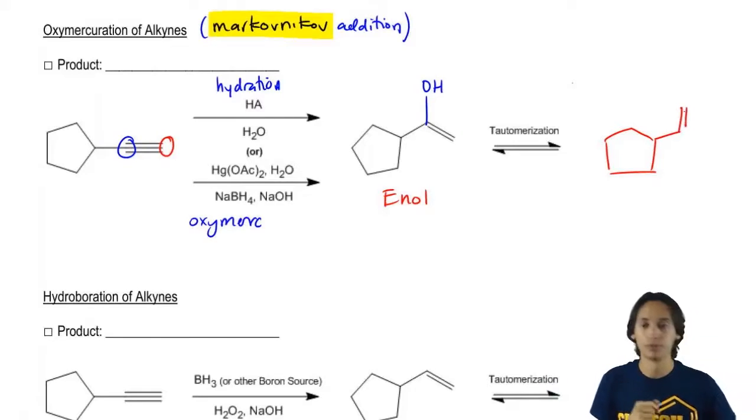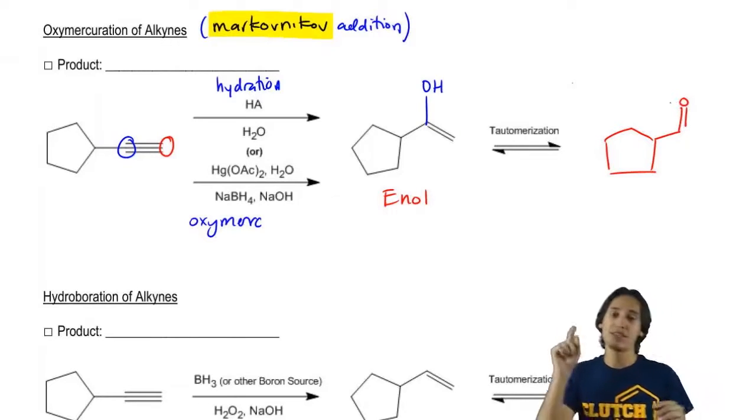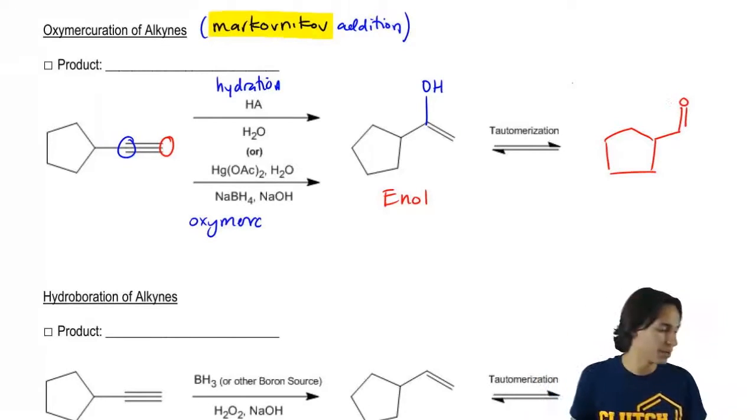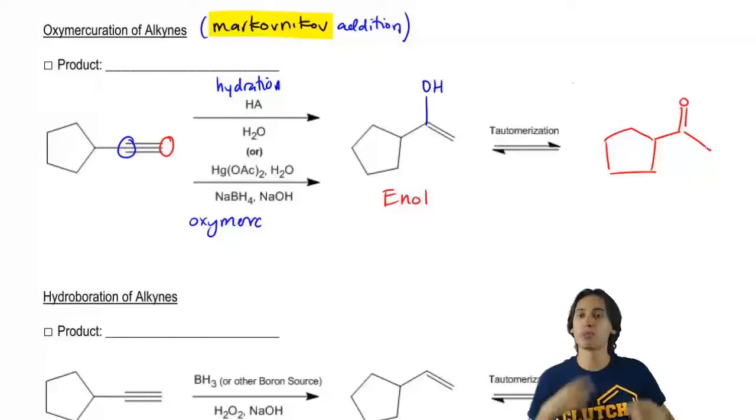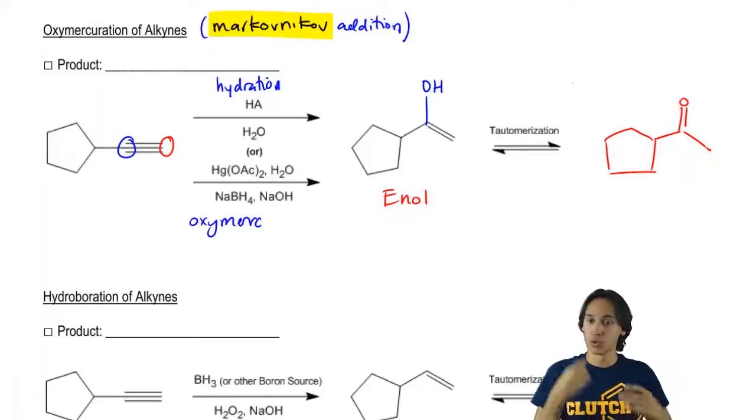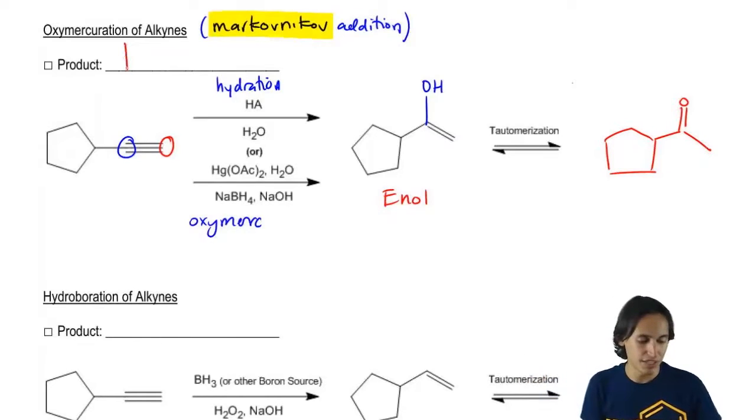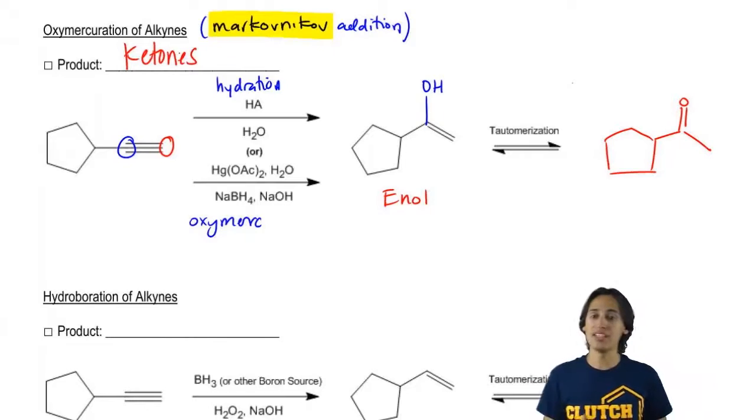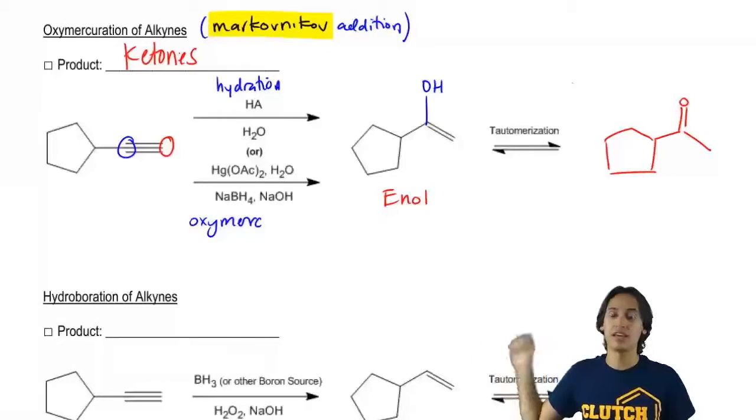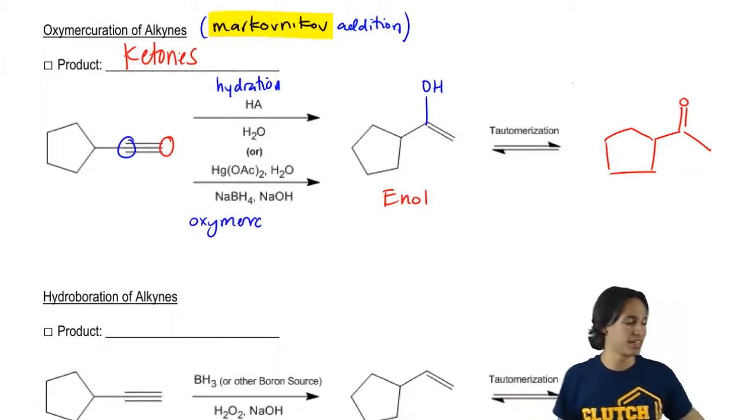But now instead of having a single bond to O, I'm going to get a double bond to O. Instead of having a double bond to the carbon, I'm now going to have a single bond to the carbon. So it turns out that the product of oxymercuration or even hydration is going to be ketones. So any time that I'm Markovnikov hydrating a triple bond, I'm going to get a ketone as the product.